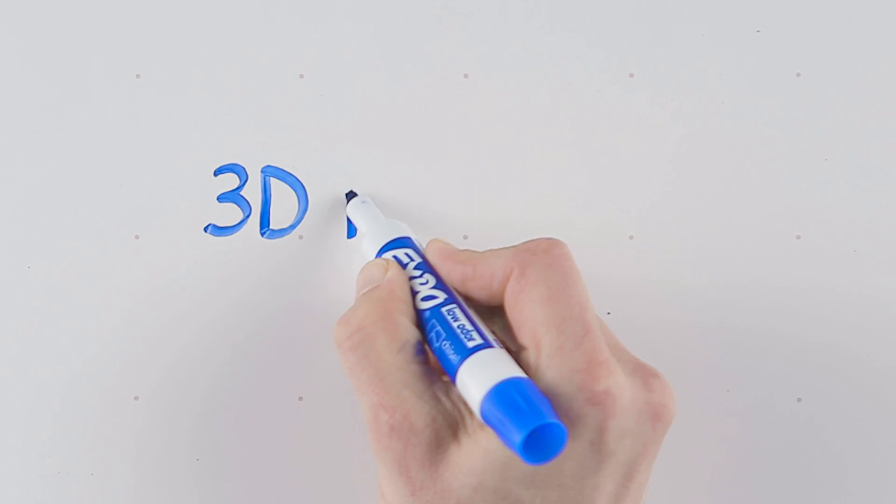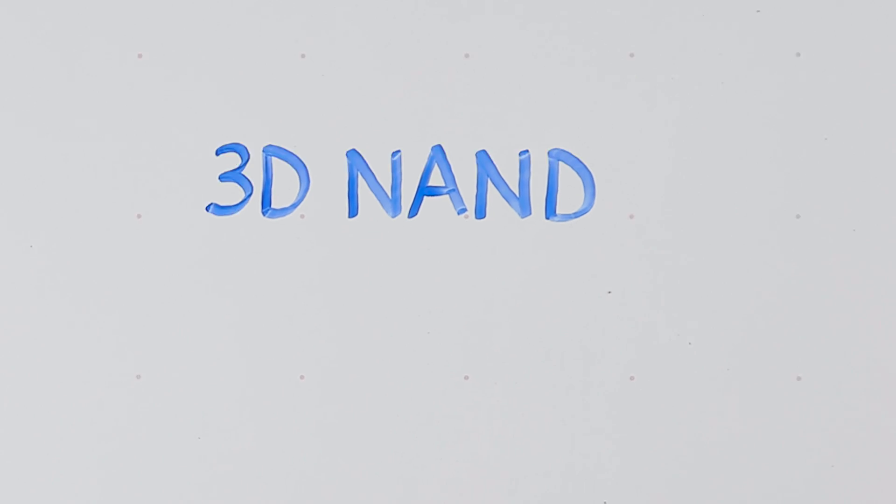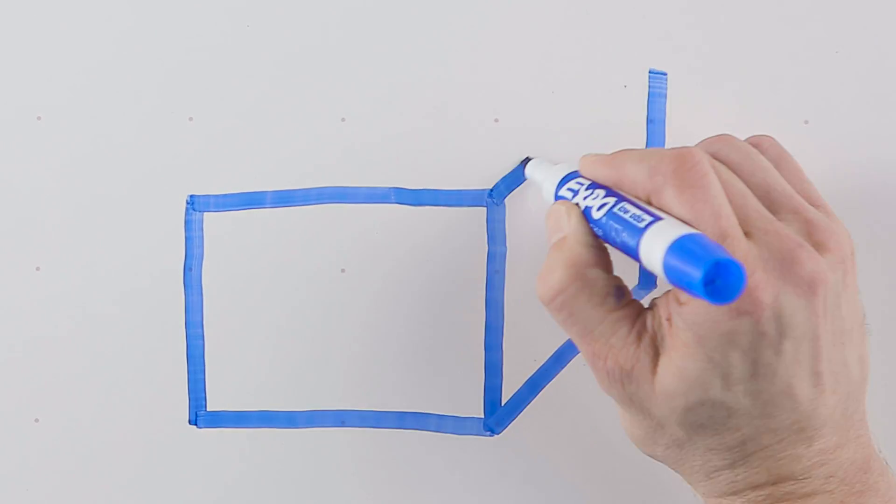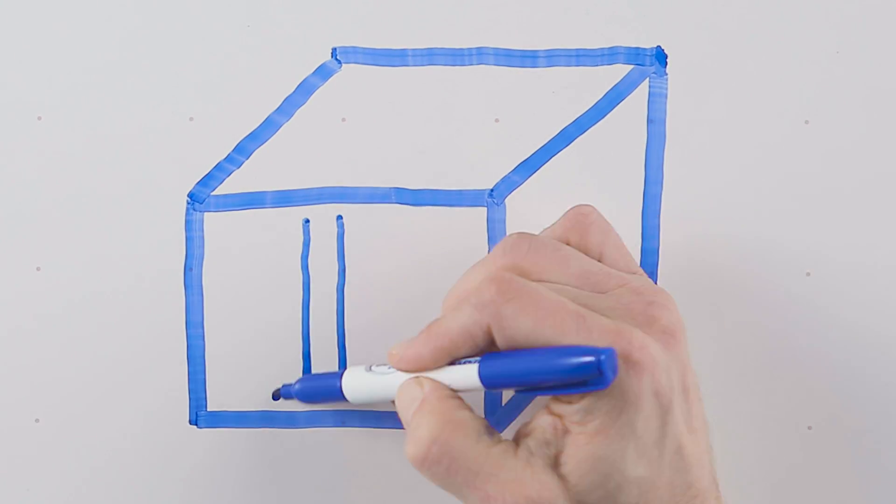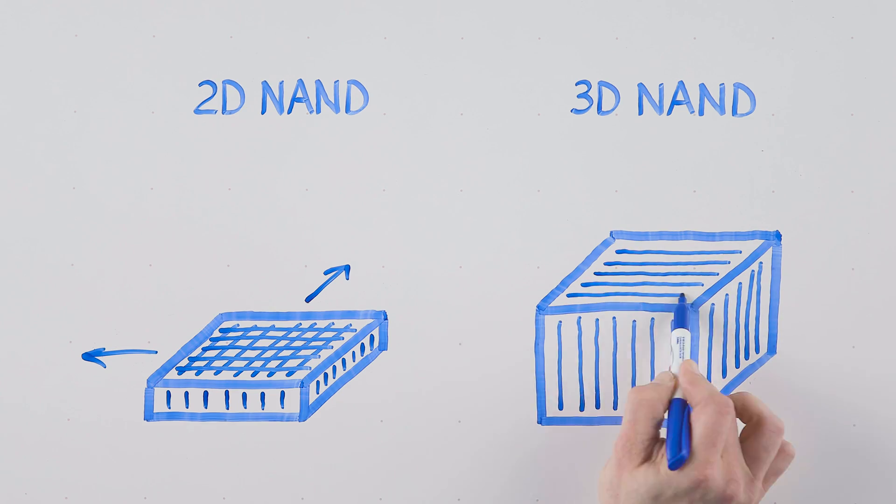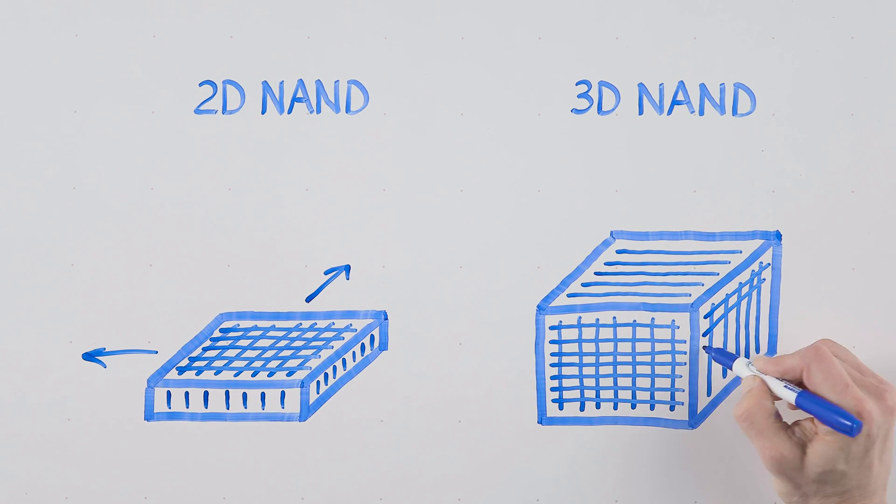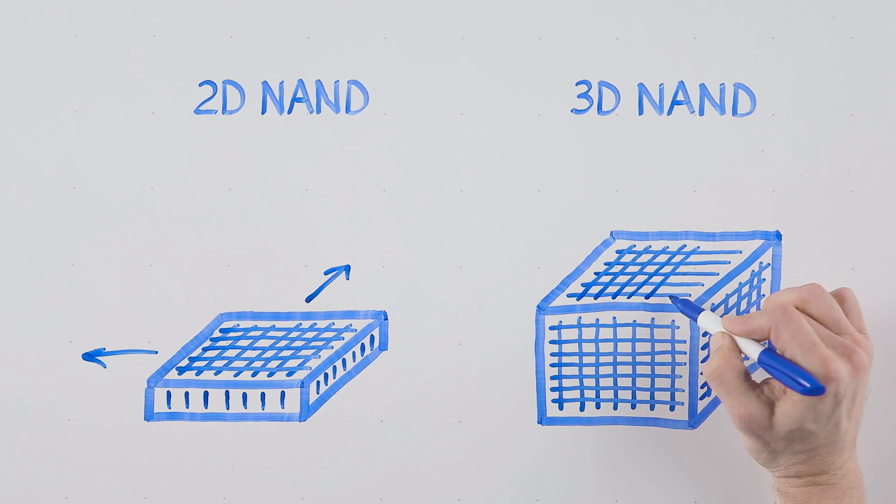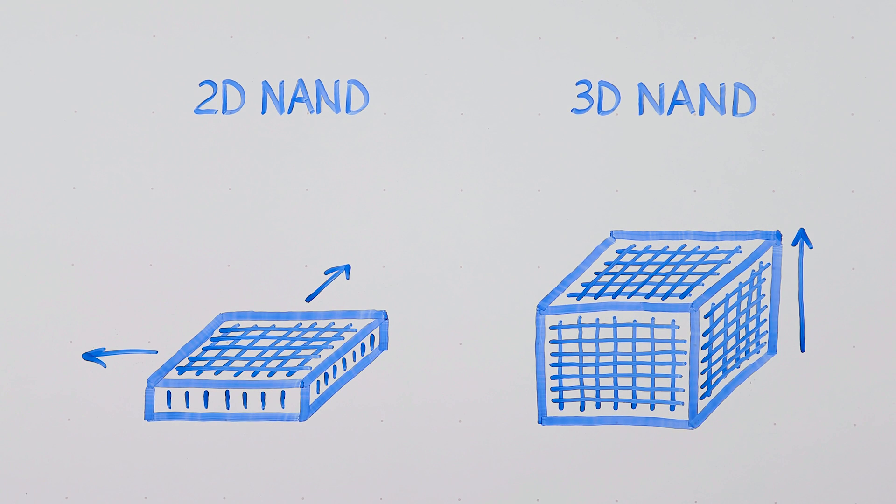So this is where revolution number one comes in, 3D NAND technology. With 3D NAND technology, you start to layer the NAND on top of each other, building more and more capacity inside the same physical footprint. This allows us to get much more density, much more capacity at the same level of cost.